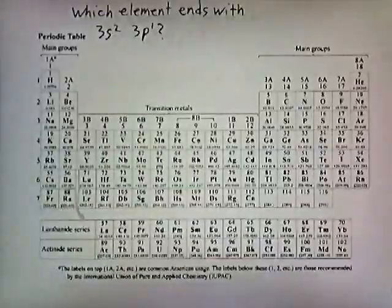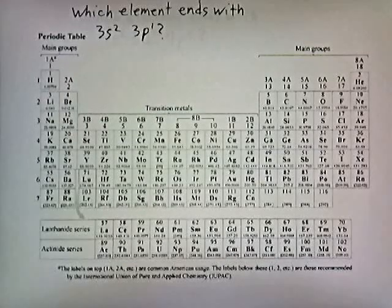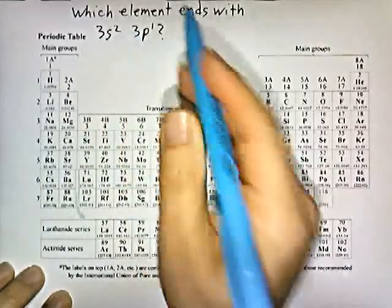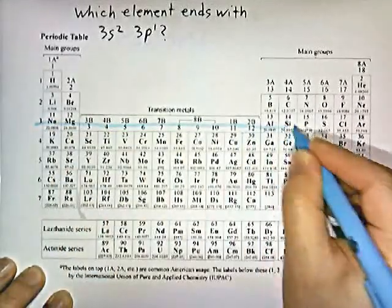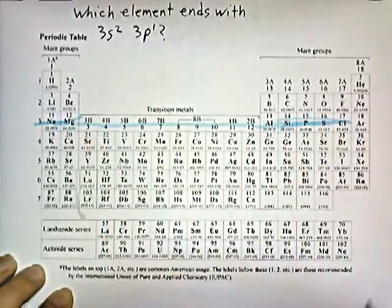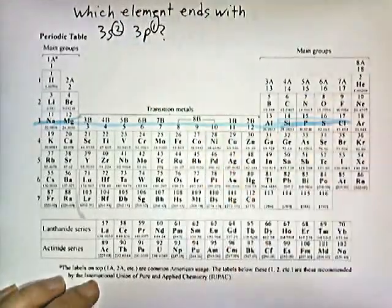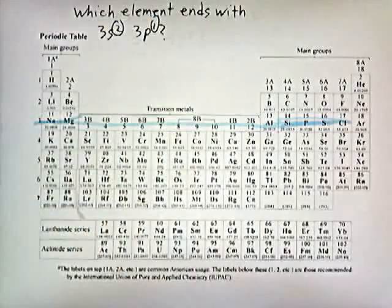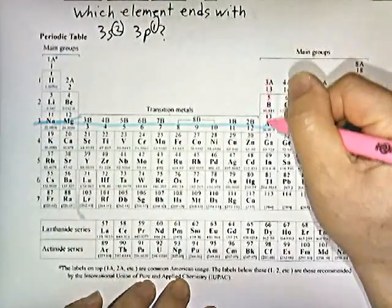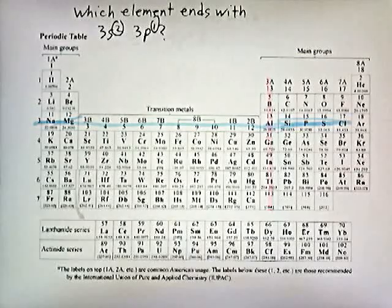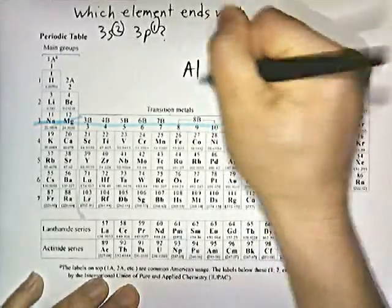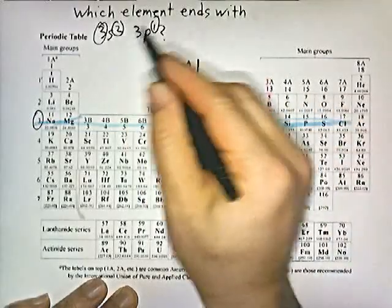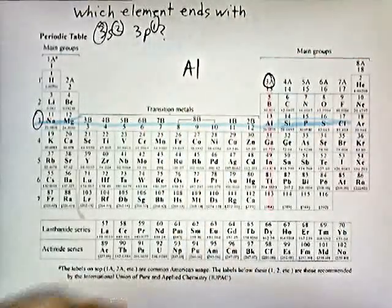Which element ends with 3s2, 3p1? The energy level is 3, so it's in period 3. The number of valence electrons is 2 plus 1 equals 3, so it's in group 3A. Period 3 crosses group 3A at aluminum. It's aluminum, because aluminum is in the third period and has 3 valence electrons, placing it in group 3A.